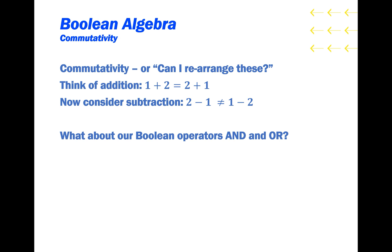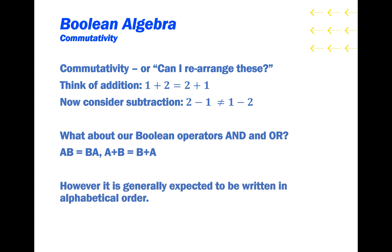So our Boolean operators AND and OR. It's pretty easy to see that A and B is the same as B and A, and similarly with the OR gates. However it is generally expected to be written in alphabetical order to standardize the expressions.